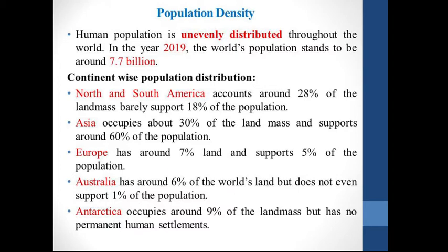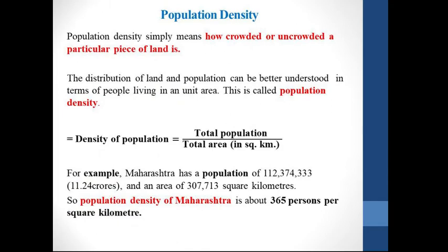So with these statistics, we can conclude that there are some factors which affect population distribution. For example, Antarctica has 9% of landmass but does not support any permanent settlement — because of extreme cold climate. Population density simply means how crowded or uncrowded a particular piece of land is. The distribution of land and population can be better understood in terms of people living in a unit area. Population density is calculated as total population divided by total area in square kilometres.